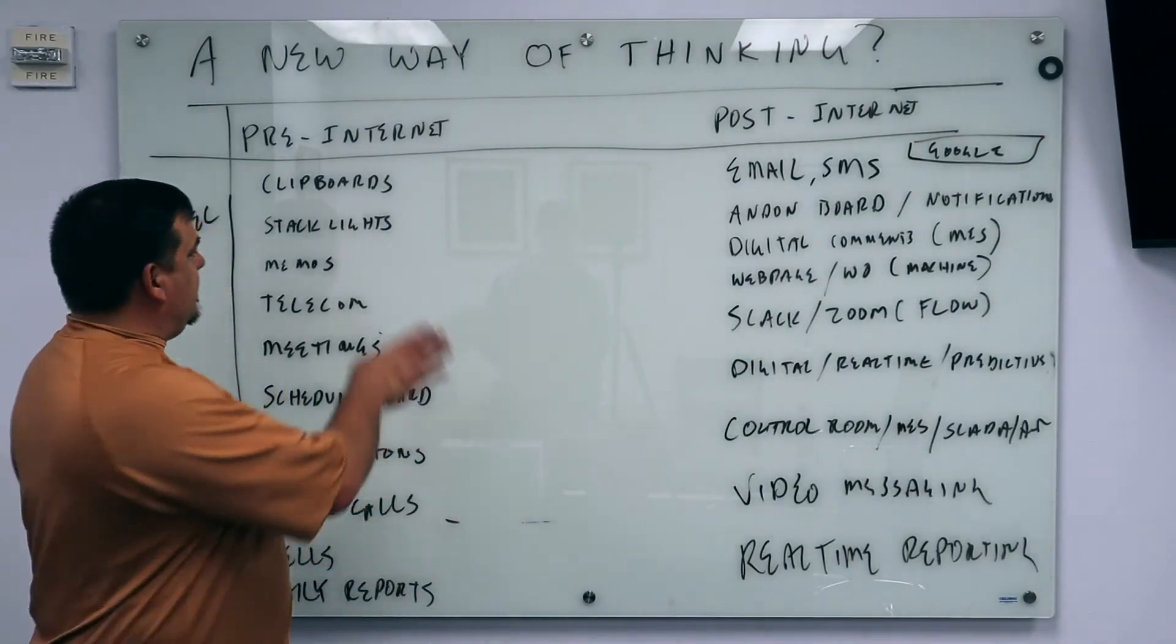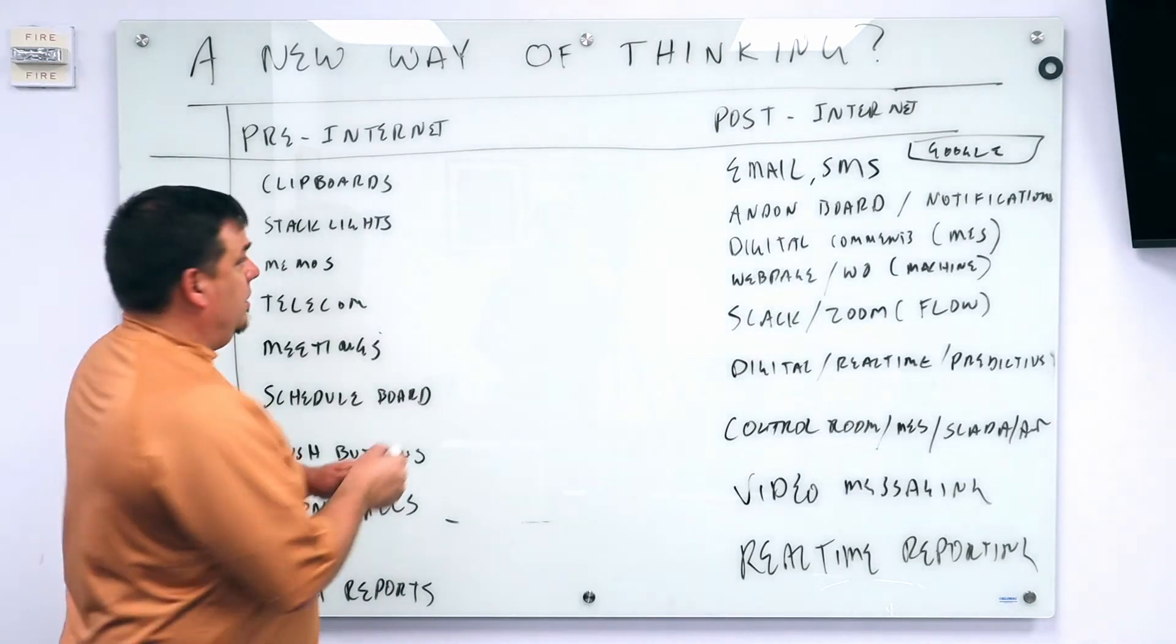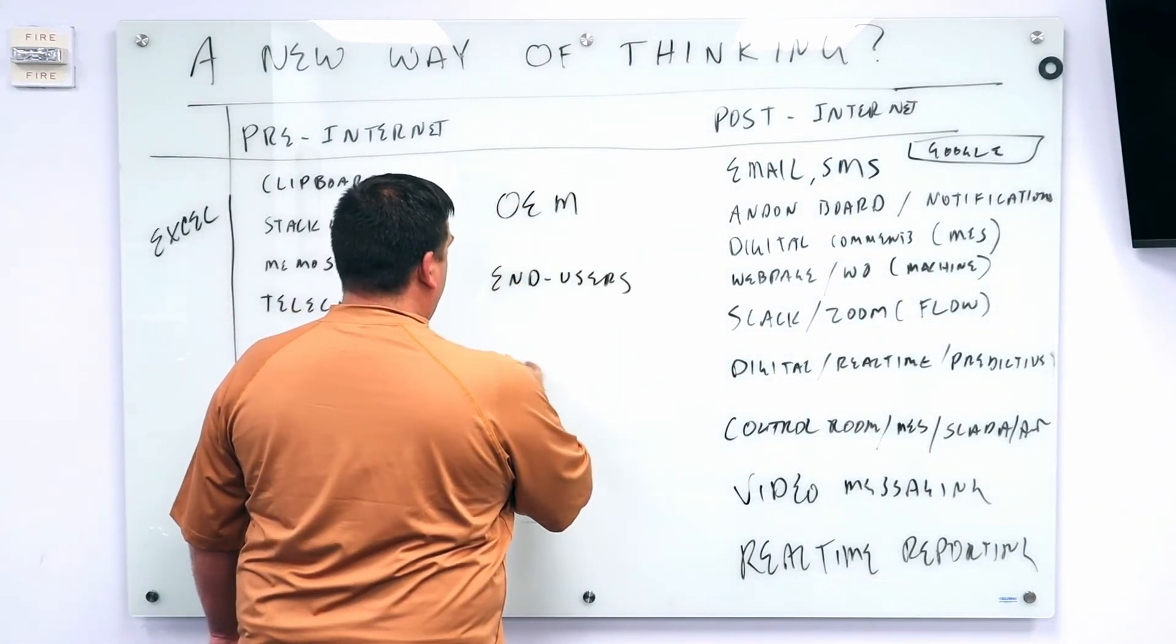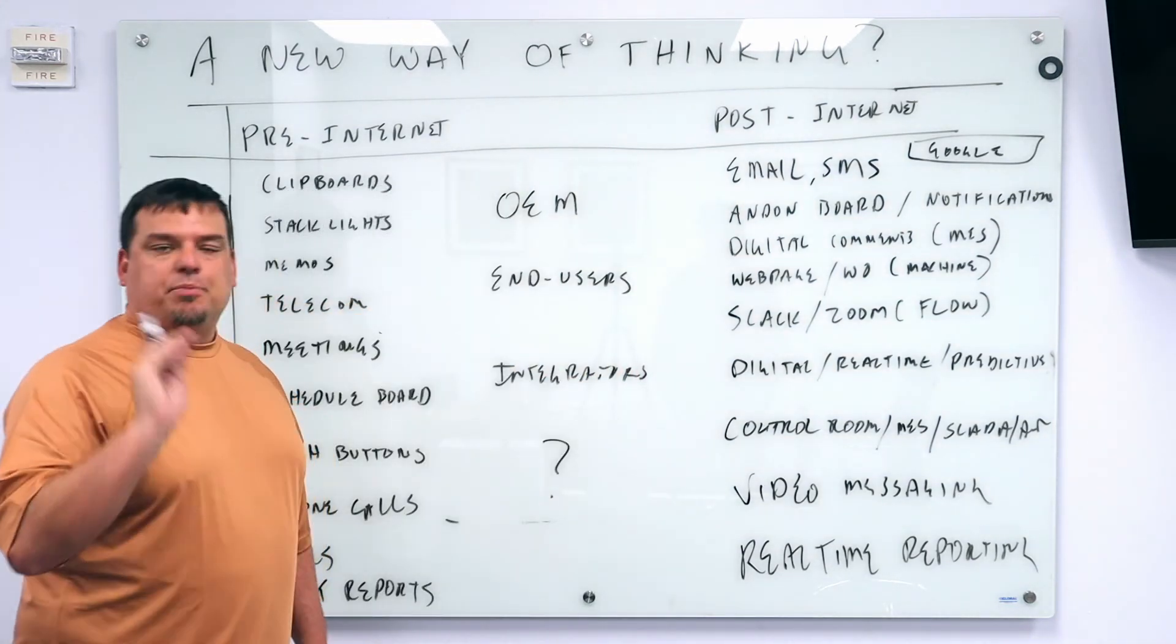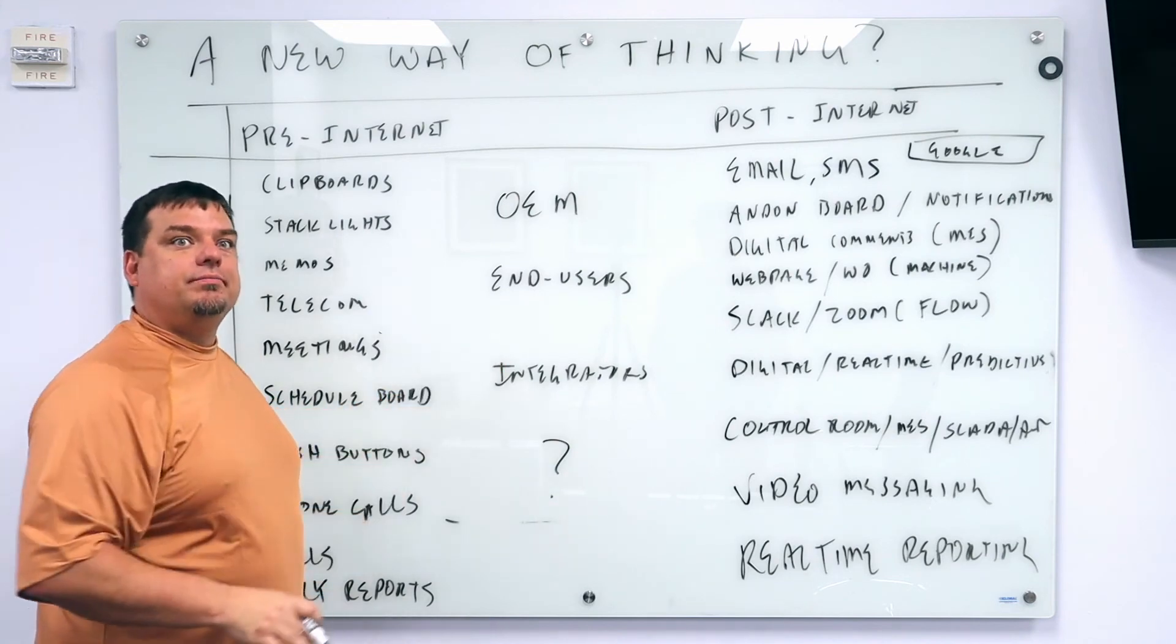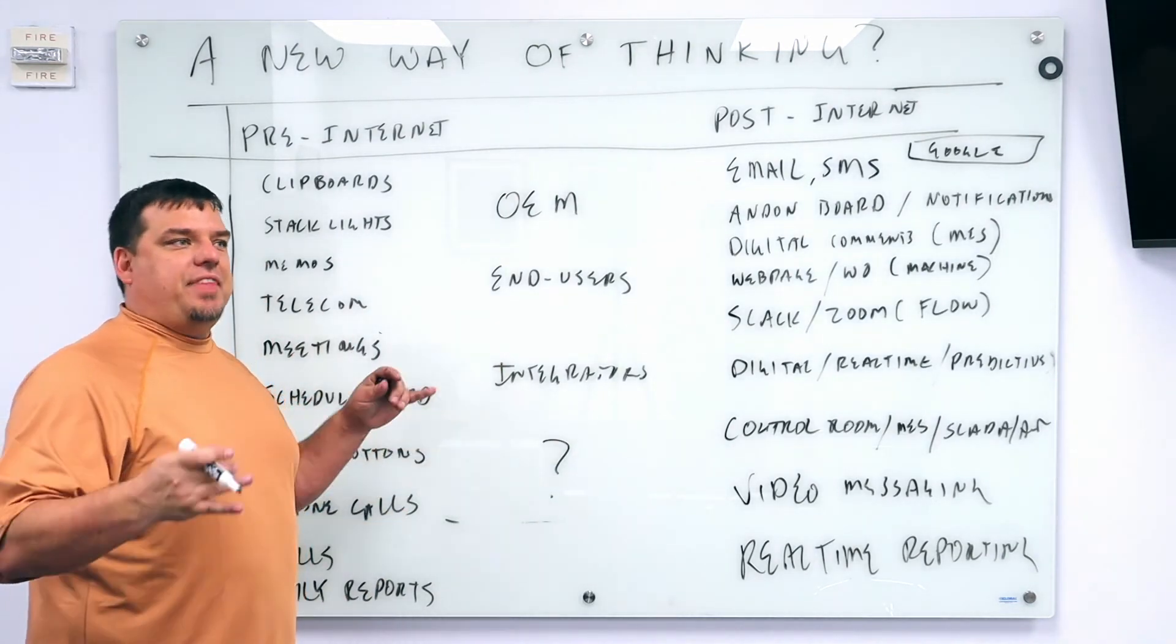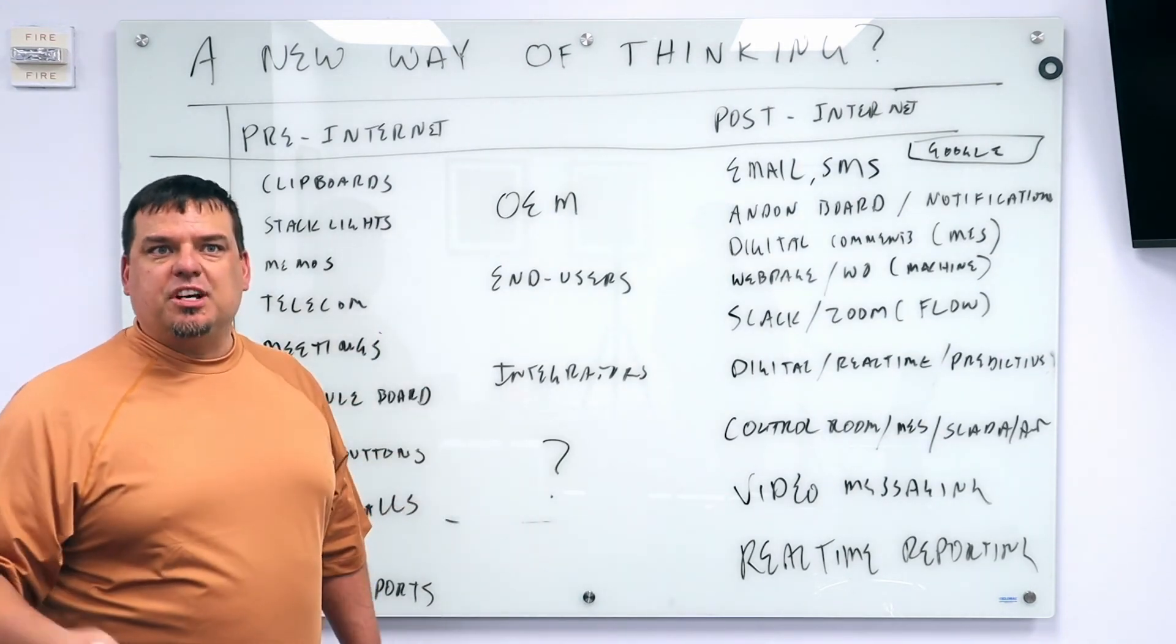Everyone knows that this transformation needs to take place. Everyone knows. The OEMs know, the end users know, and the integrators know. We all know. There are just very few who know how. That's the problem. That's the reason it's been so slow. It's not that people aren't motivated. They just don't know how to do it yet. That's where Intelliq comes in, 4.0 Solutions, Flow Software.